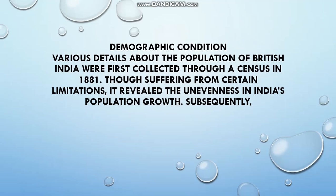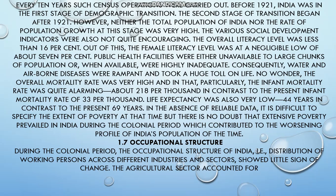When the British were in our country, at that time the first population census was conducted in 1881 under British rule. Since then, it has been conducted every 10 years. In the history of demographic transition, 1921 is regarded as the year of great divide. Before 1921, calculations were done unevenly, but from 1921 onwards, the census was conducted consistently every 10 years.